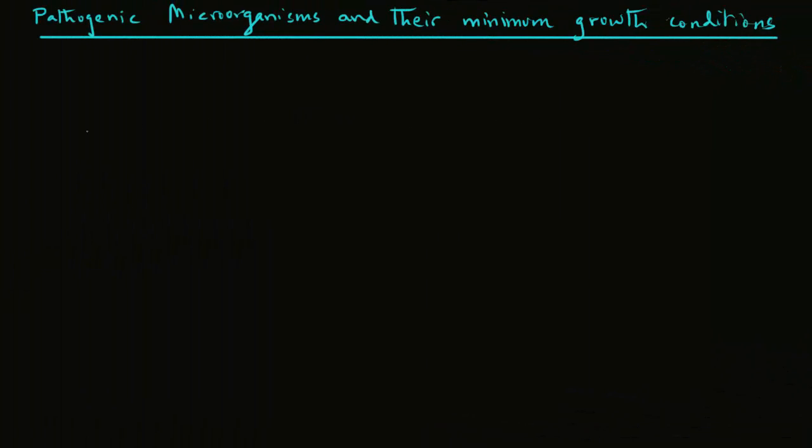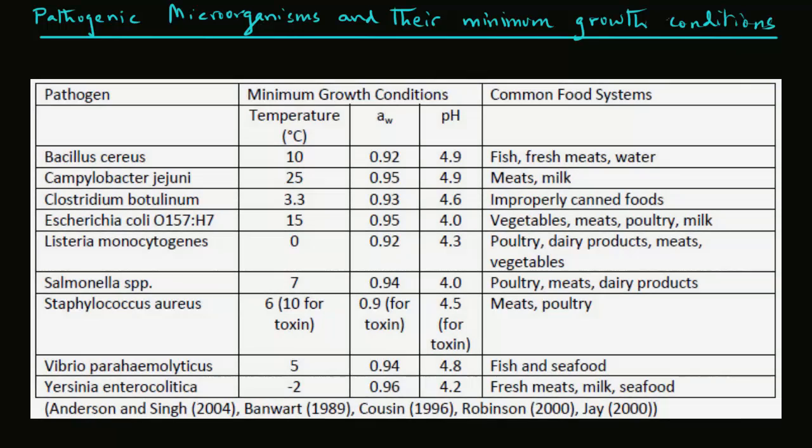In this last slide here, we will look at some of the pathogens and their minimum growth conditions. As you will note, we have various pathogens that can grow in a food. The temperatures vary. For example, in case of Listeria, that can grow under very low temperature conditions, close to zero degrees Celsius.